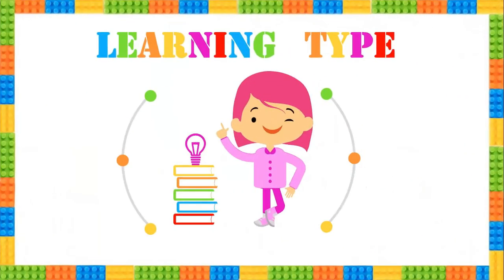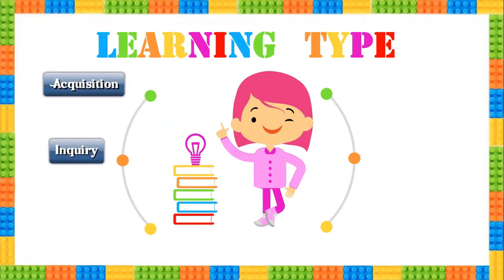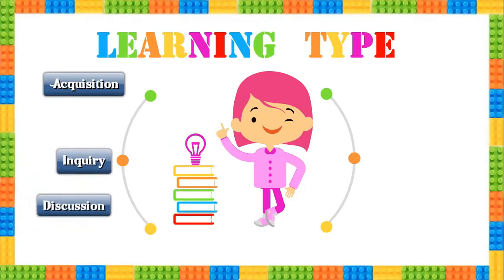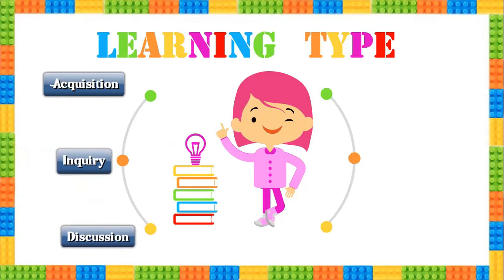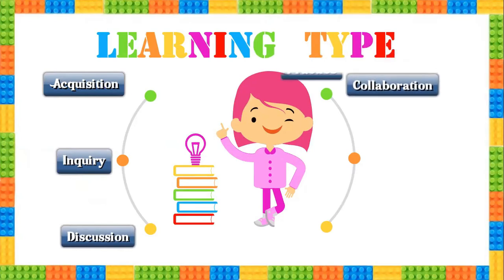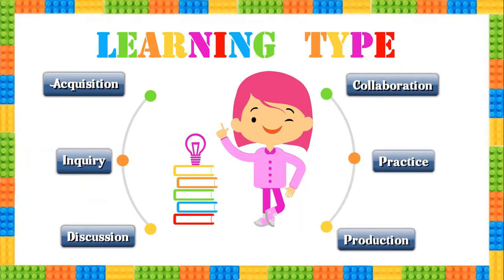Thinking of learning types: the method begins with acquisition, where students acquire knowledge from the videos. Then inquiry — they inquire more about the content. Then discussion among themselves, followed by collaborative learning, then practice, and finally production before the class. All six learning types are used in our lesson.